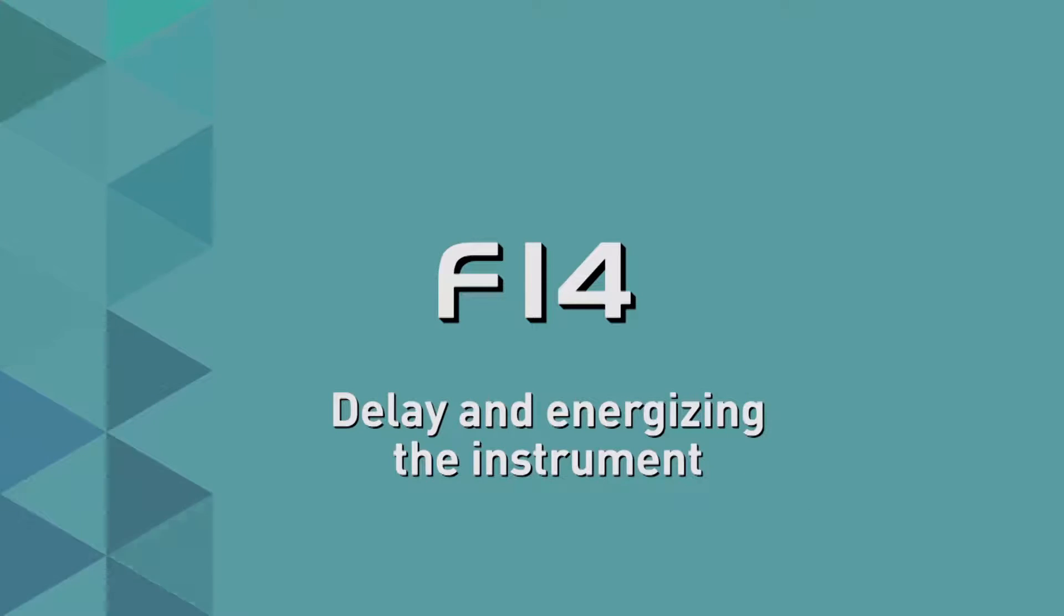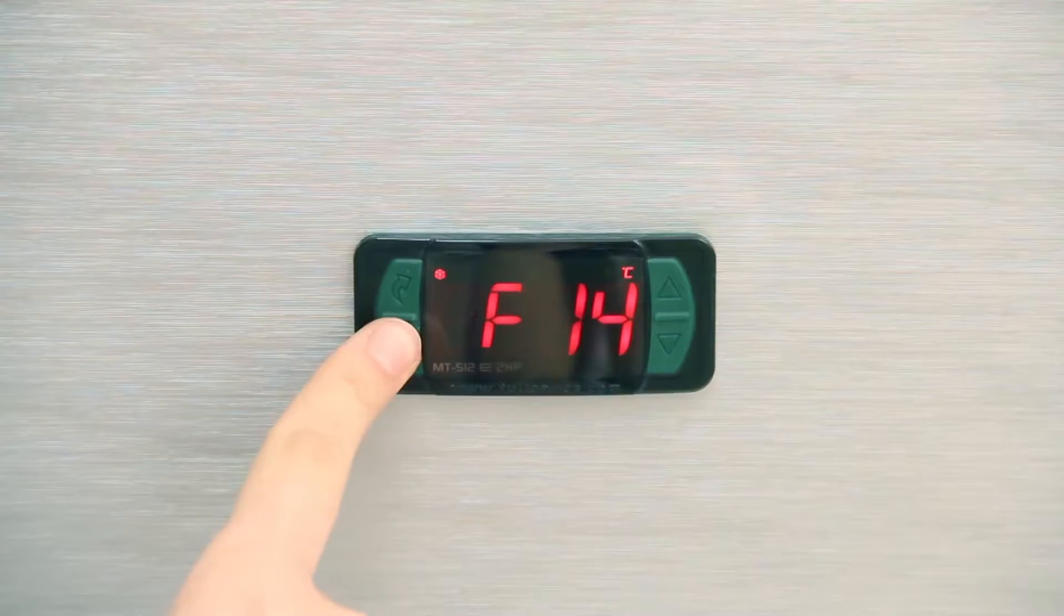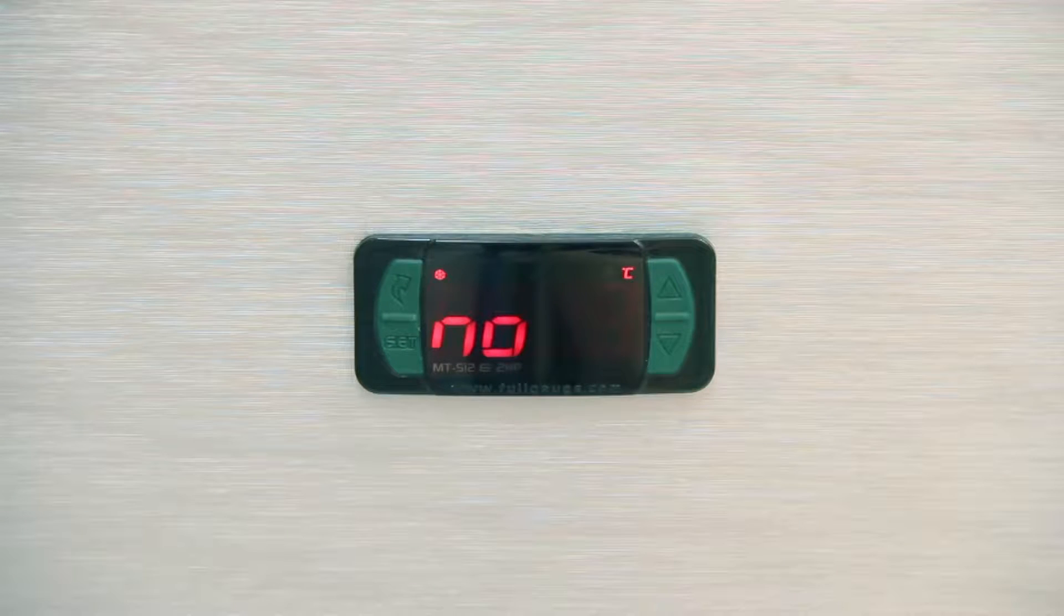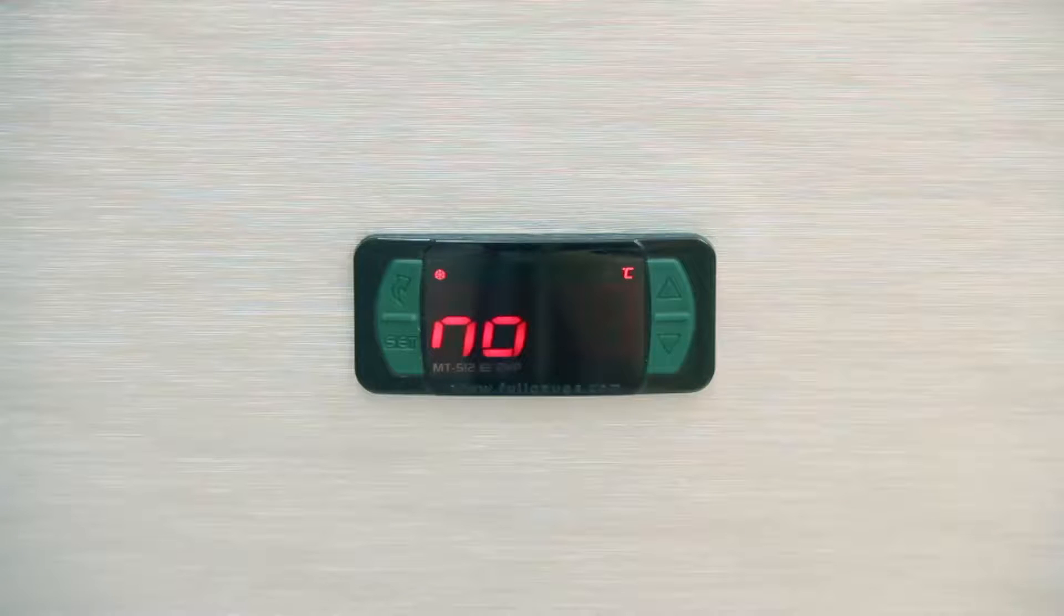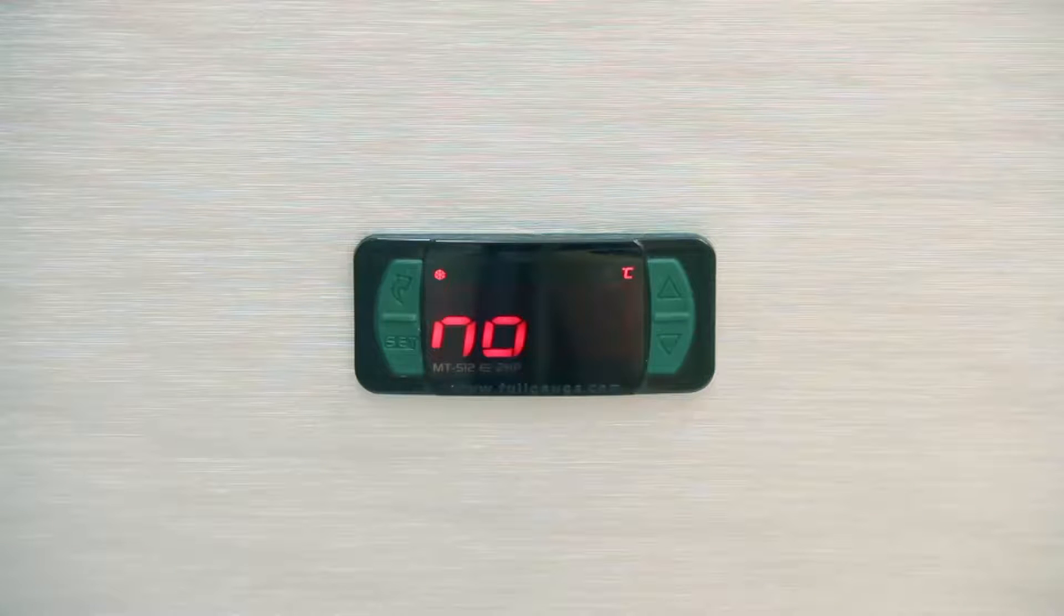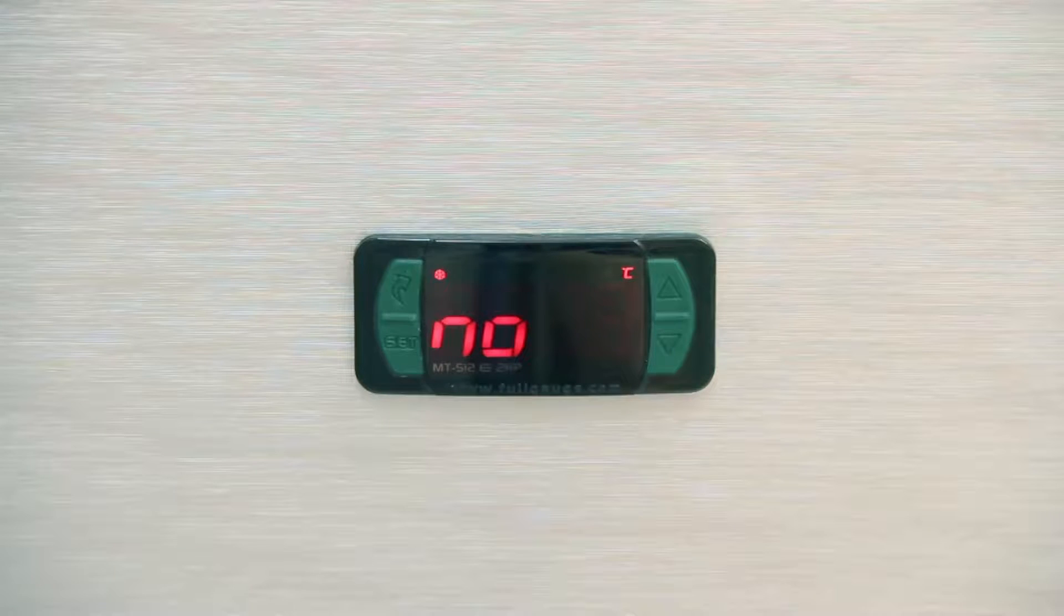F14, Delay in Energizing the Instrument. This setting prevents the generation of electricity demand peaks in the event of failure and return, when there are multiple devices. Select No, so as not to delay the energizing. If you choose a delay, provide a time of 1 to 240 minutes. In the examples, we chose not to adopt the delay.